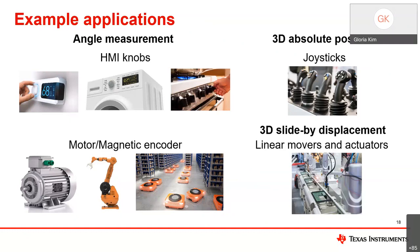Staying on angle measurement, 3D sensors can also be used for detecting motor position or magnetic encoders — for example, the joints along a robotic arm or wheels in an autonomous mobile robot, which require precise position detection for proper movement and navigation. For 3D absolute position applications, a great example is joysticks, where the 3D hall sensor detects the amplitude and direction of the joystick. Compared to mechanical potentiometer implementations, the hall-based solution reduces wear and tear, creating a more reliable and sustainable solution.